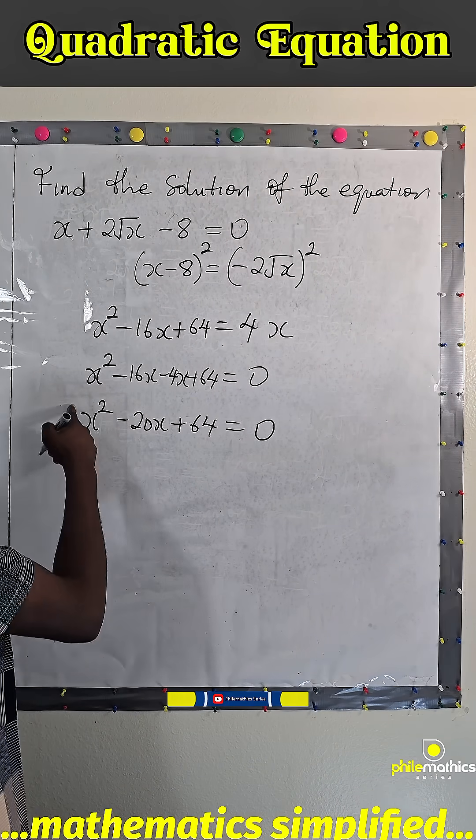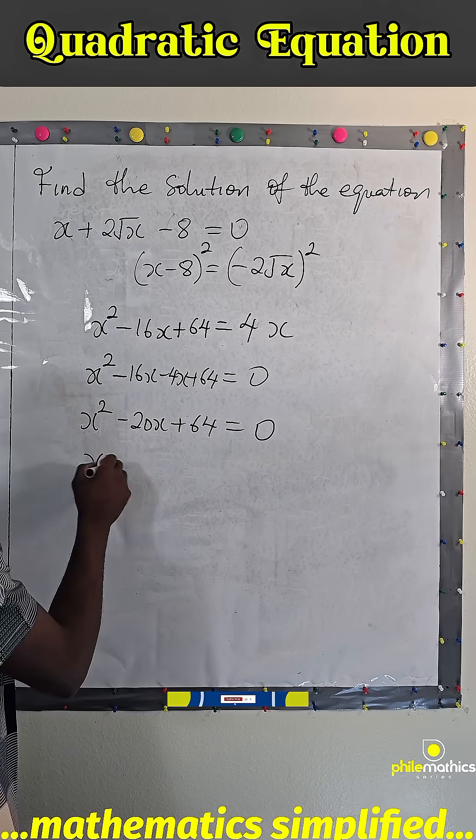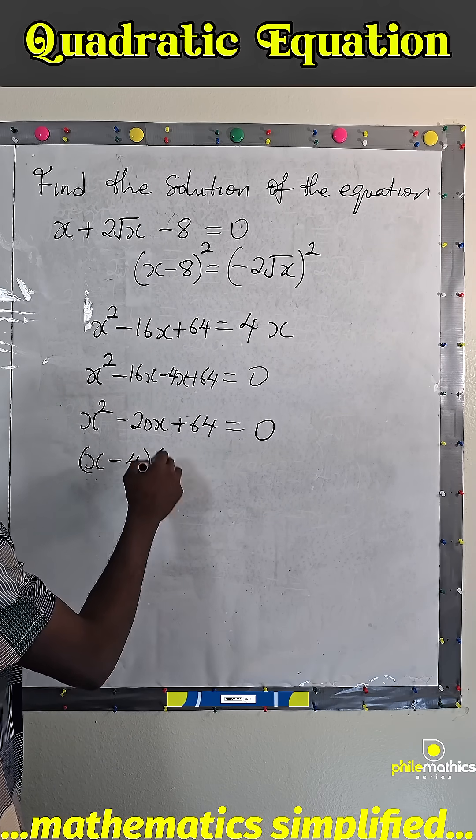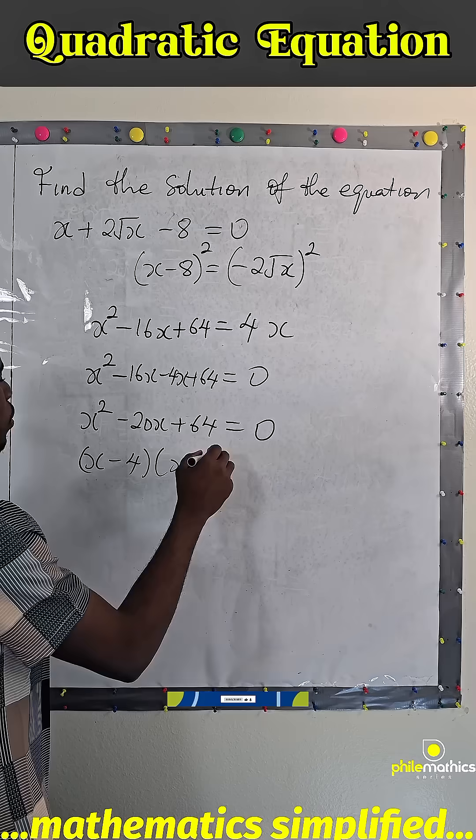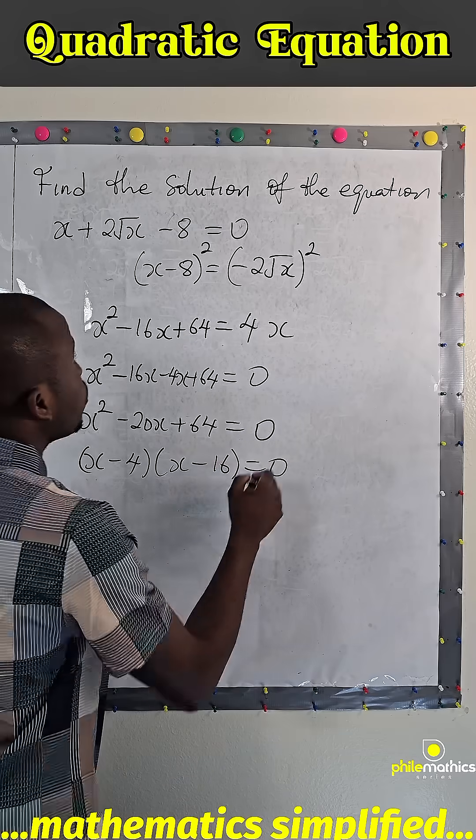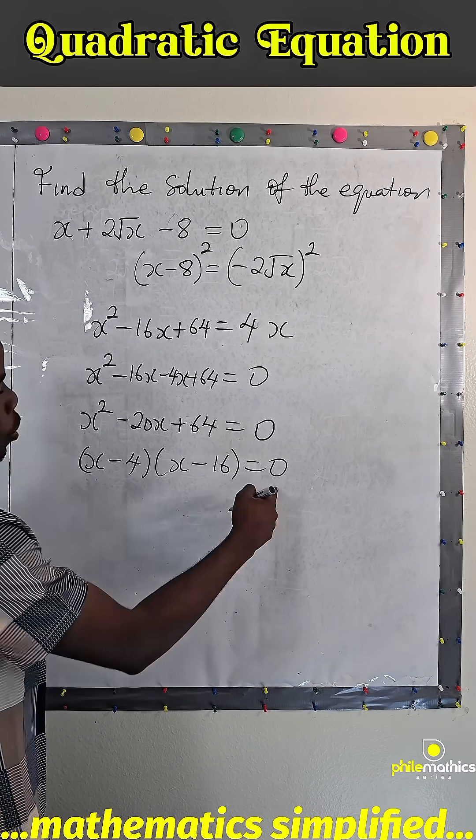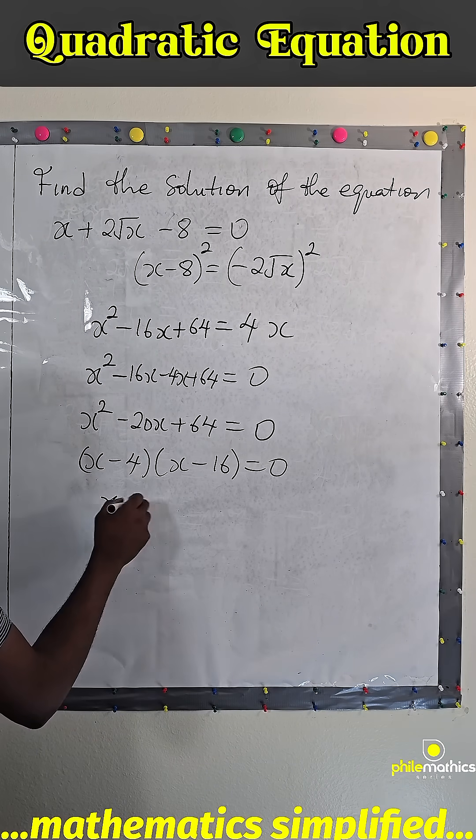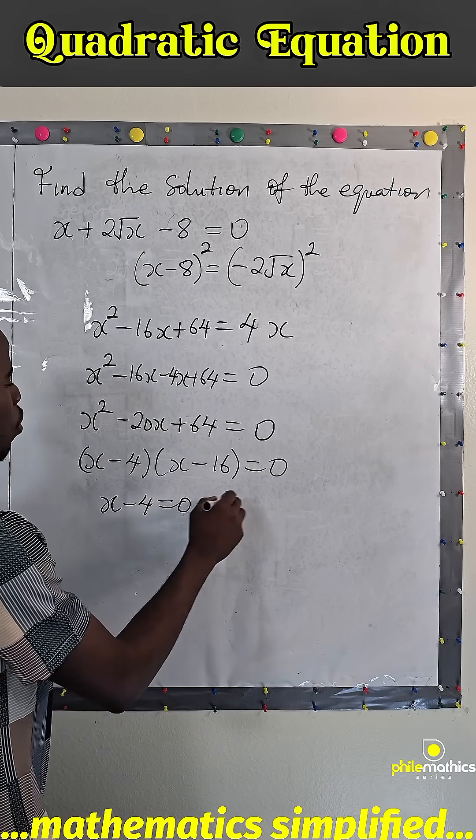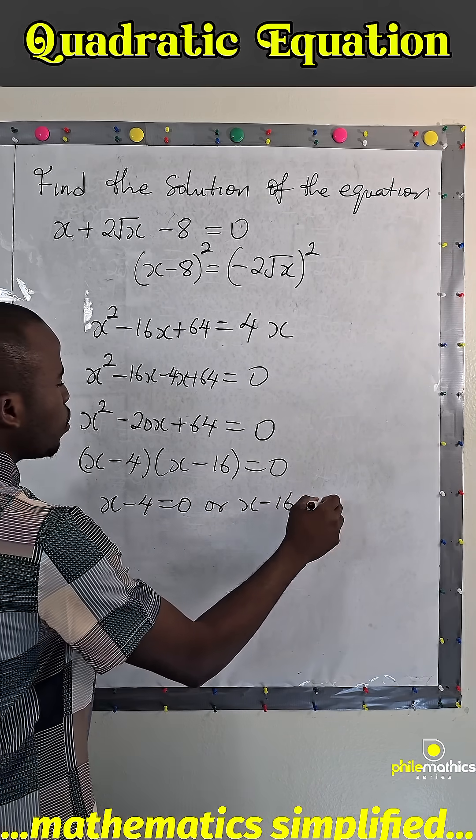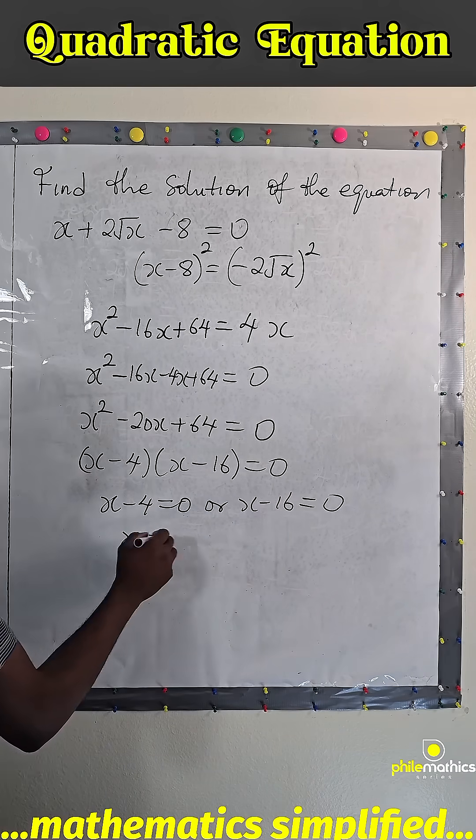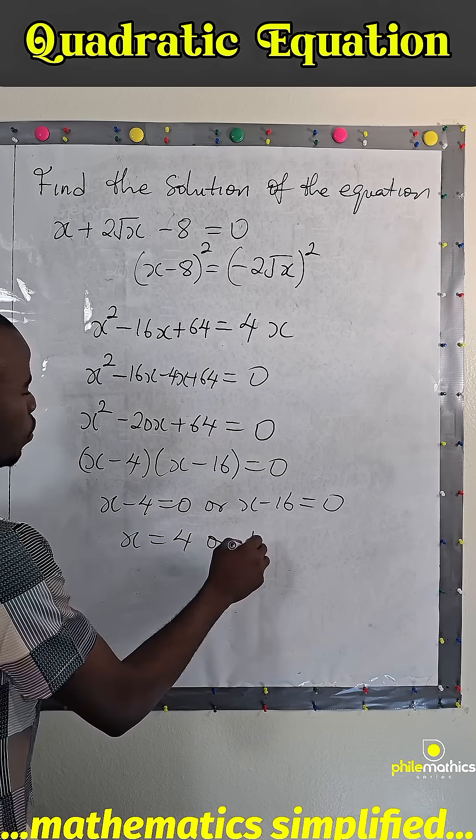So since the coefficient here is 1 you can easily write x minus 4, x minus 16 equals 0. So the solution to this is either this is 0 or this is 0. So x minus 4 equals 0 or x minus 16 equals 0, so that x is 4 or 16.